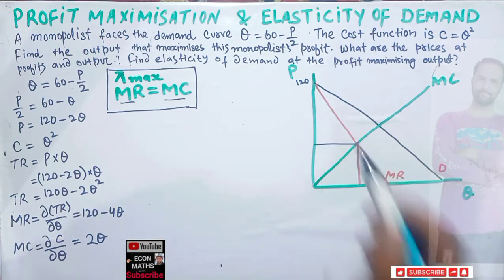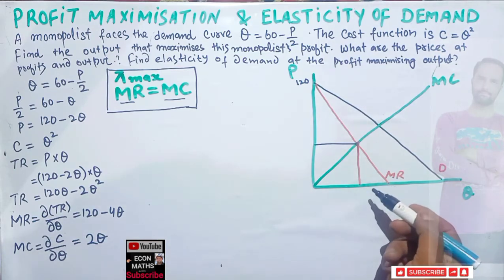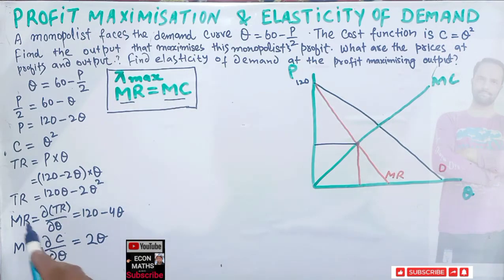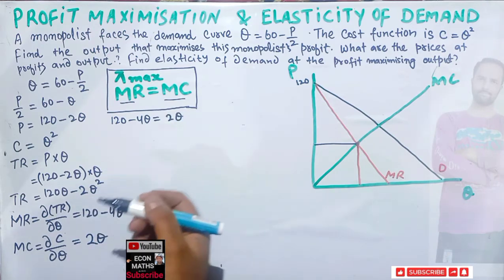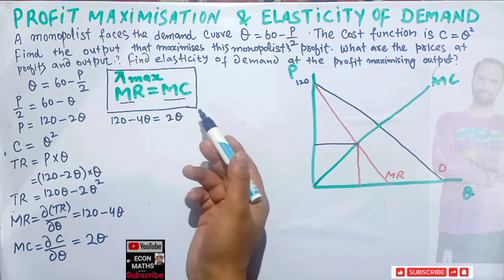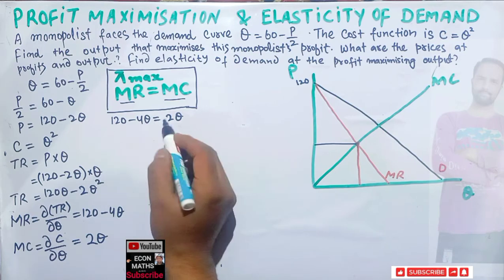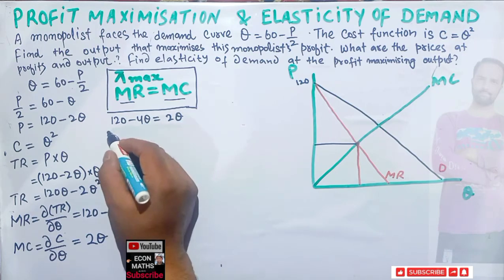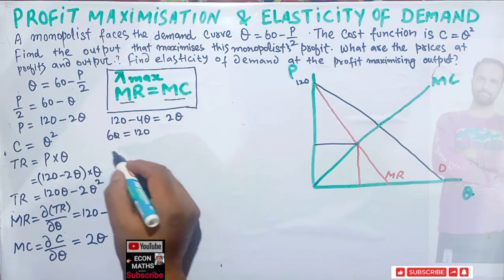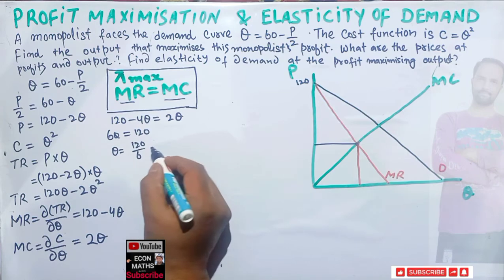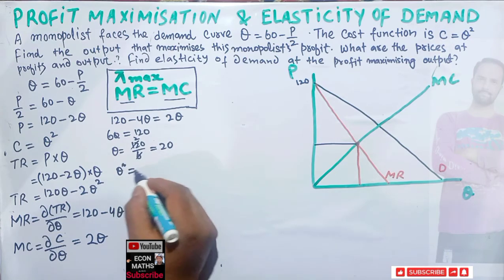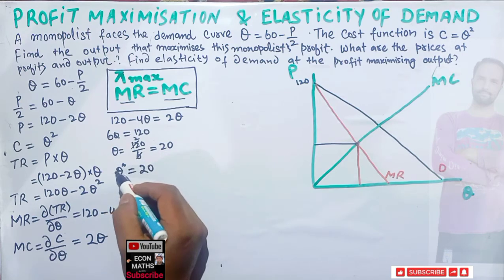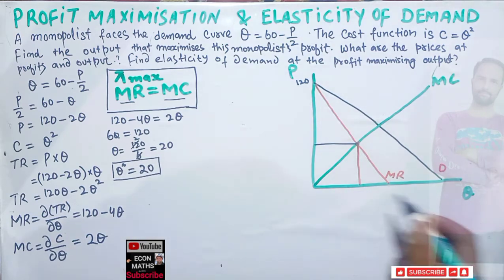The intersection of MR and MC gives us the equilibrium quantity and profit-maximizing price. Setting MR = MC: 120 - 4q = 2q. Rearranging, 4q + 2q = 120, so 6q = 120, which gives q = 120/6 = 20. The profit-maximizing level of output is q = 20.